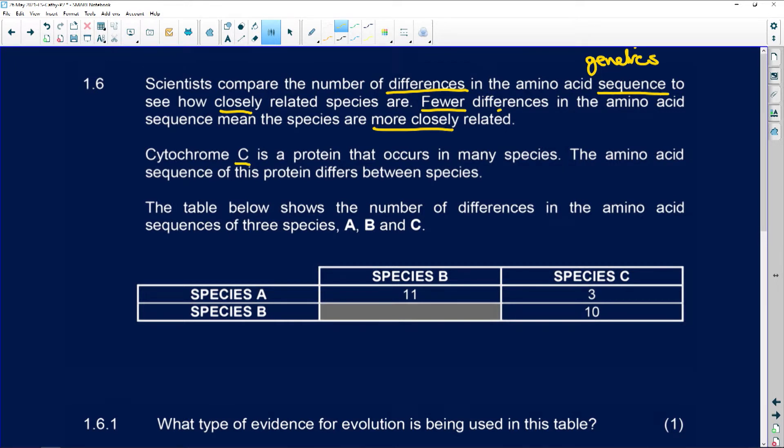Cytochrome C is a protein that occurs in many species. The amino acid sequence of this protein differs between species. The table below shows the number of differences in the amino acid sequence of the three species A, B, and C.